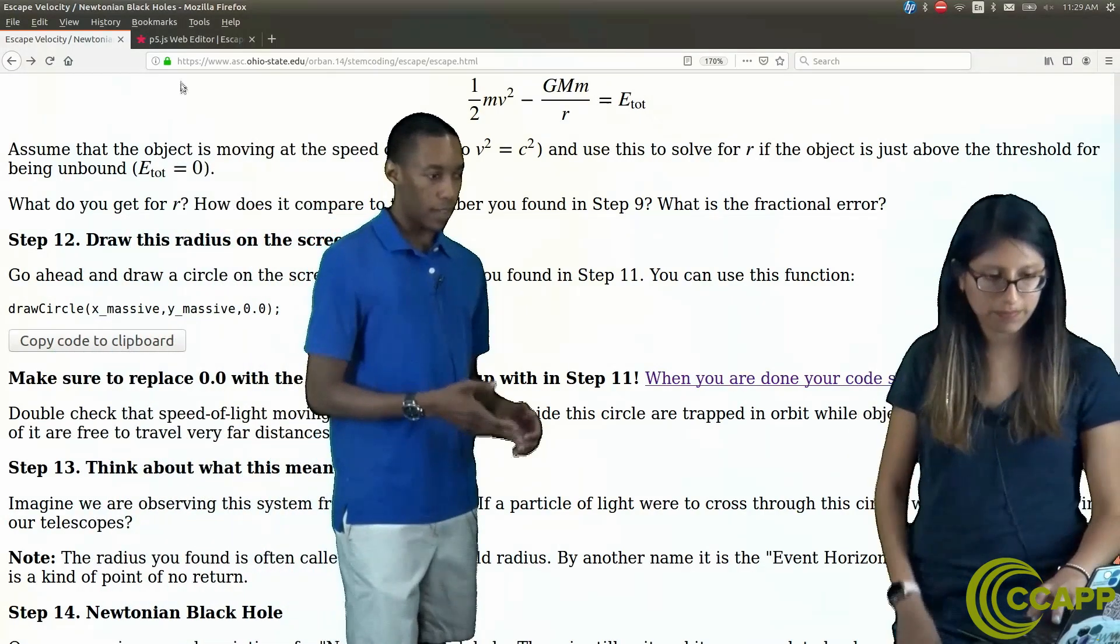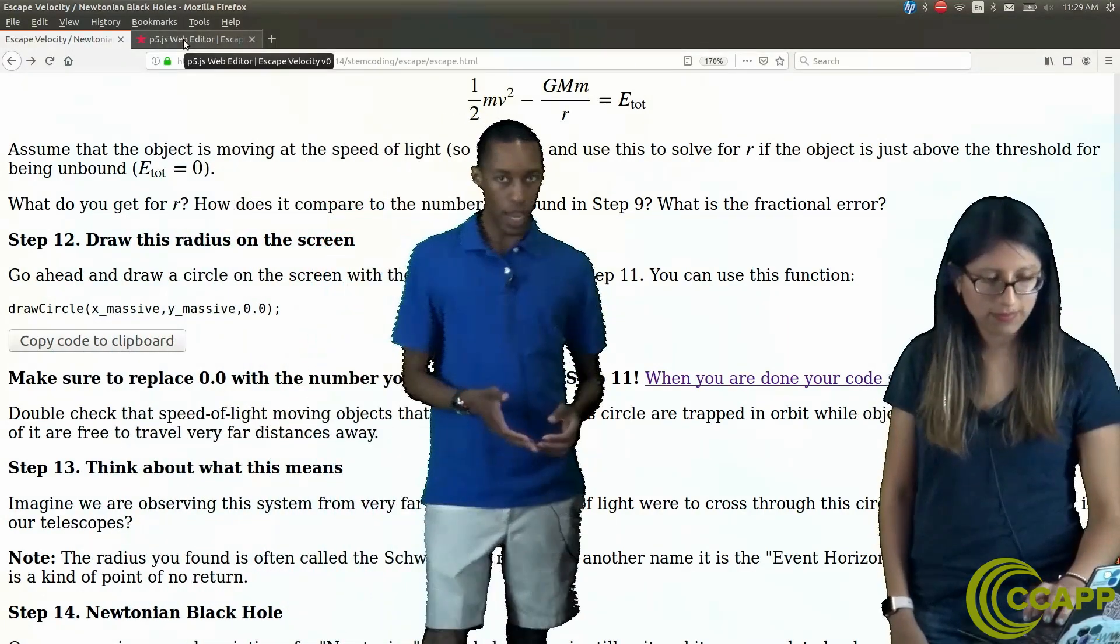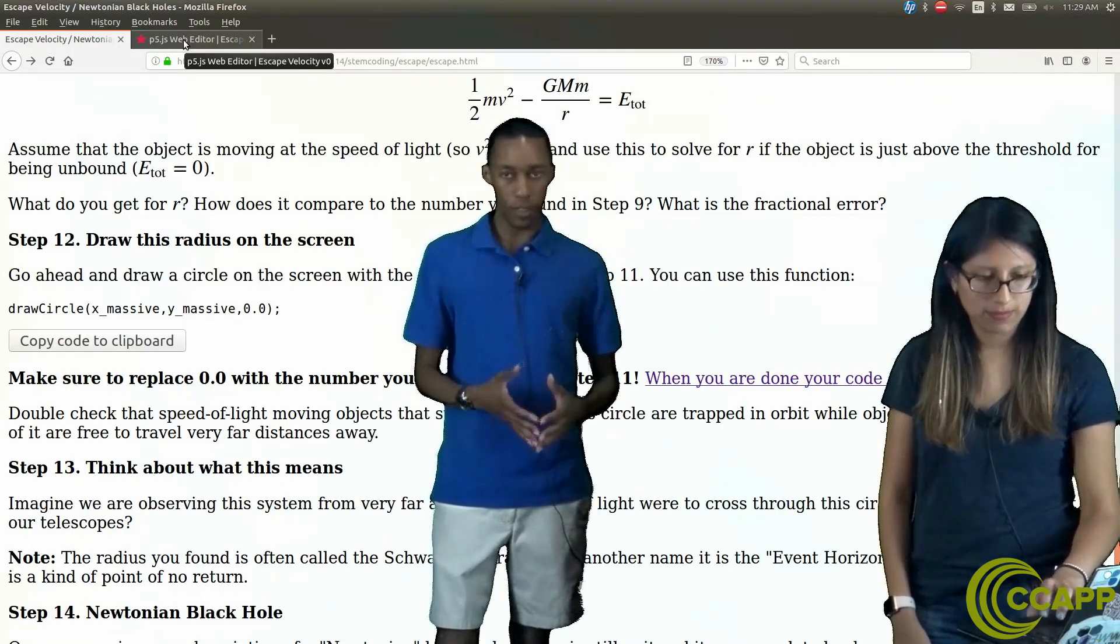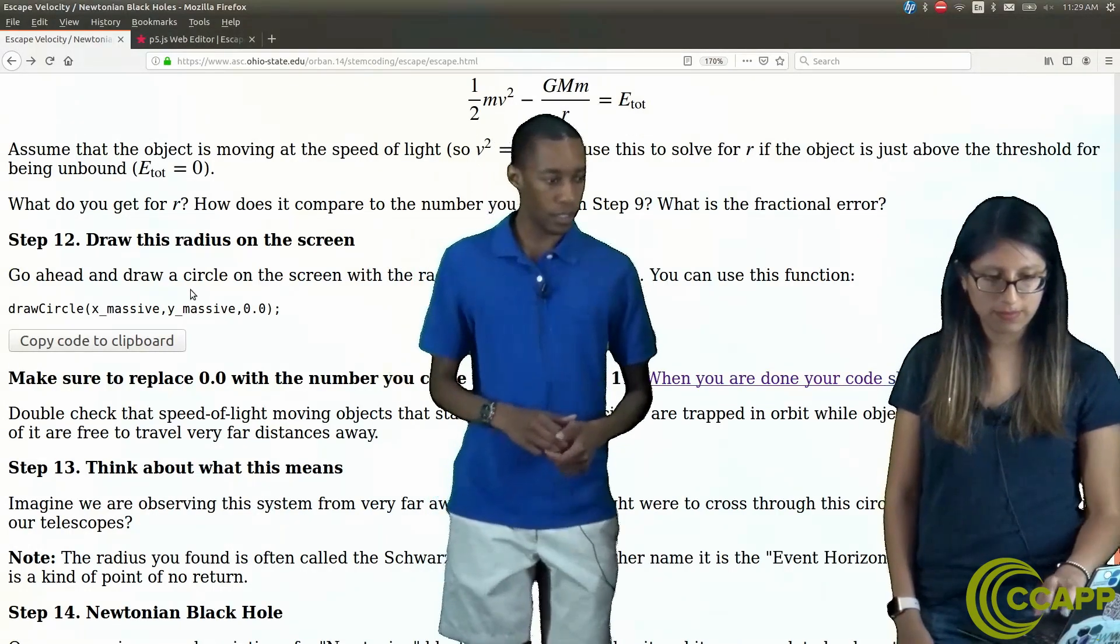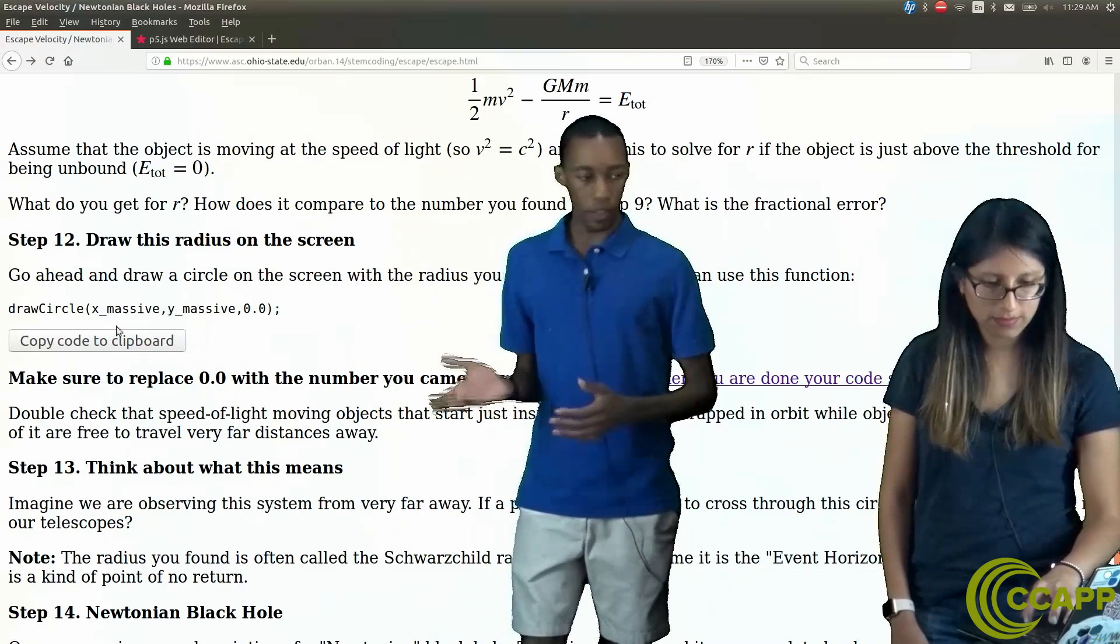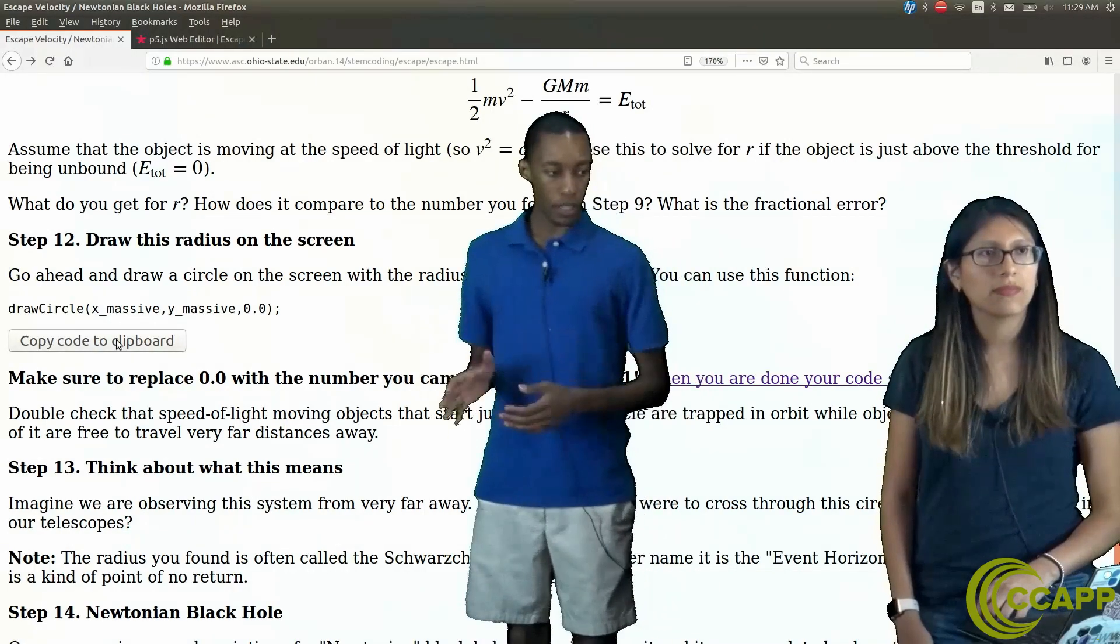Now that we calculated the actual radius, we can draw that using a simple Java draw command. Under step 12, you see draw radius on the screen. Just copy that to the clipboard.